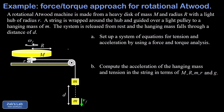In this problem we're given a rotational Atwood machine. We have a heavy disc with a mass of big M and a radius of big R. Underneath that is a light hub with a radius of little r, and there's a string wrapped around that hub. The string is draped over a pulley and attached to a hanging mass of little m. The system is released from rest, and as m falls, the disc speeds up.